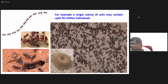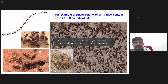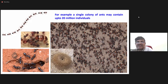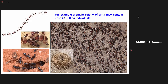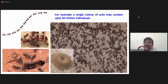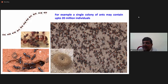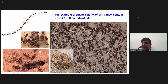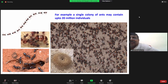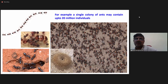What is the population of the world? Roughly 7.9 billion. Remember, if one nest contains 20 million individuals, maybe 100 nests will be equal to the population of the world — the number of individuals of insects will outnumber the number of human beings.